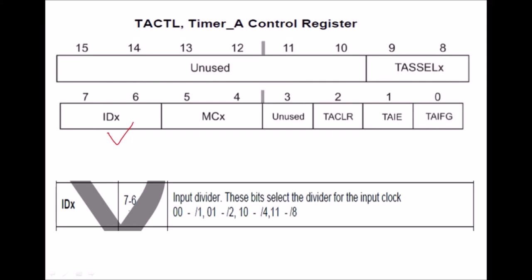The IDX bits — 2 bits — are used to select the clock divider. If 00, then divide by 1, meaning the clock is connected as-is. 01 means divided by 2. 10 means divided by 4. And 11 means divided by 8. These 2 bits are used to select the clock division.